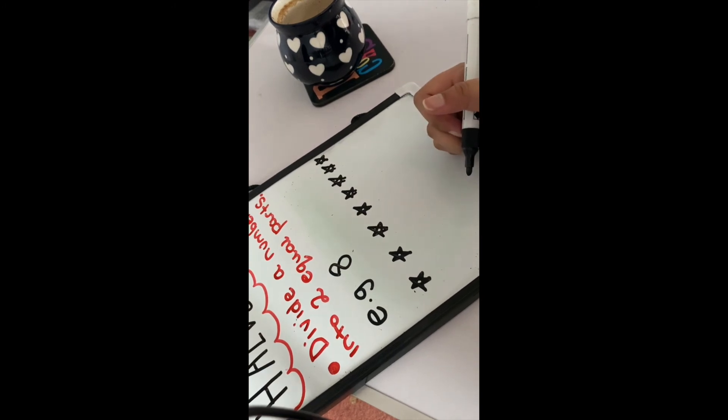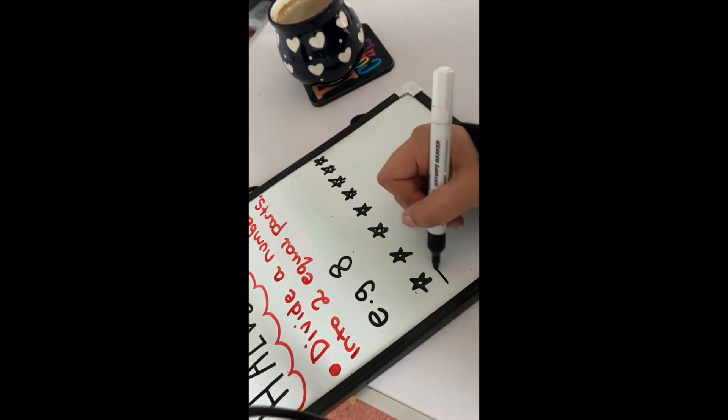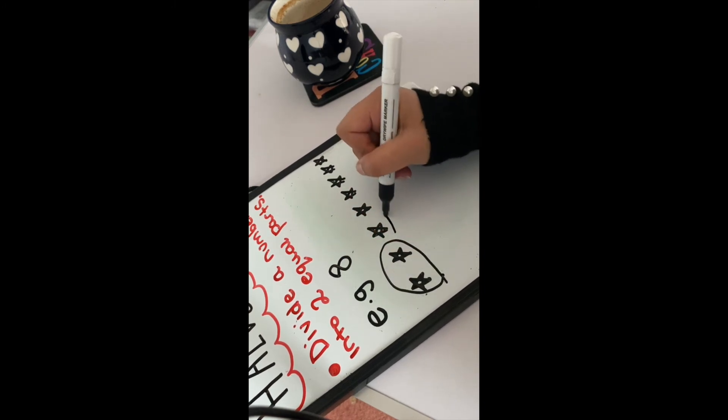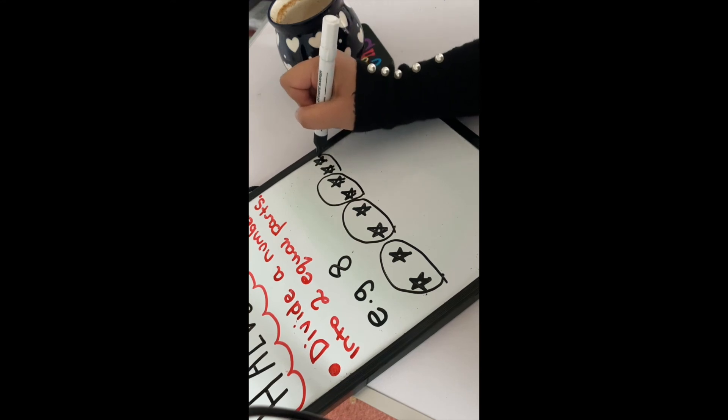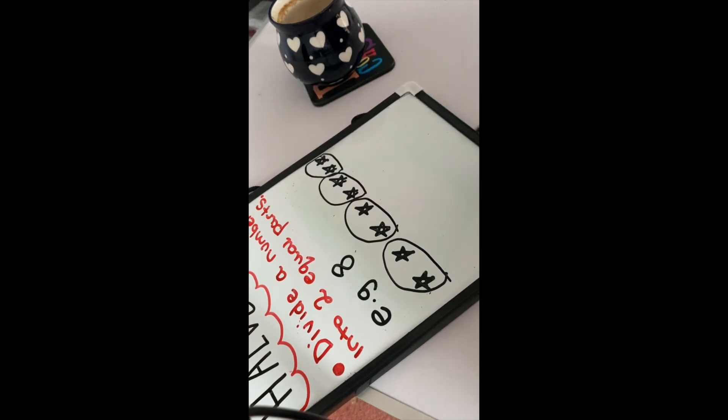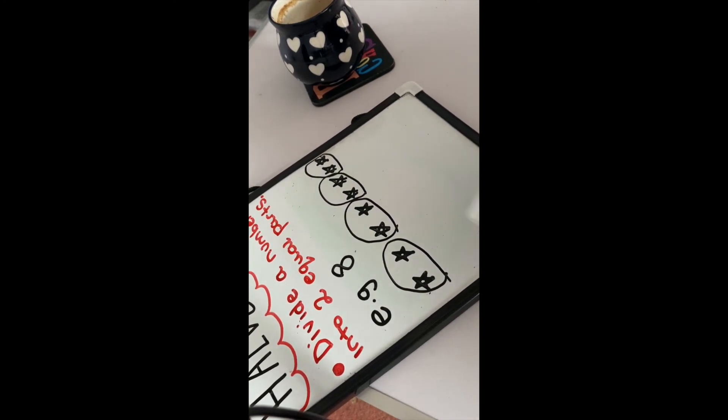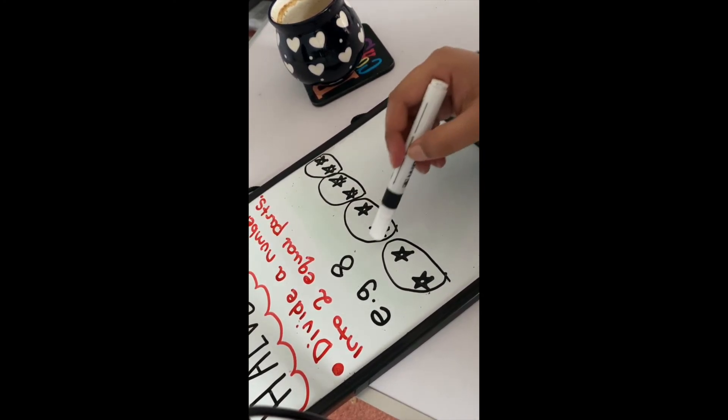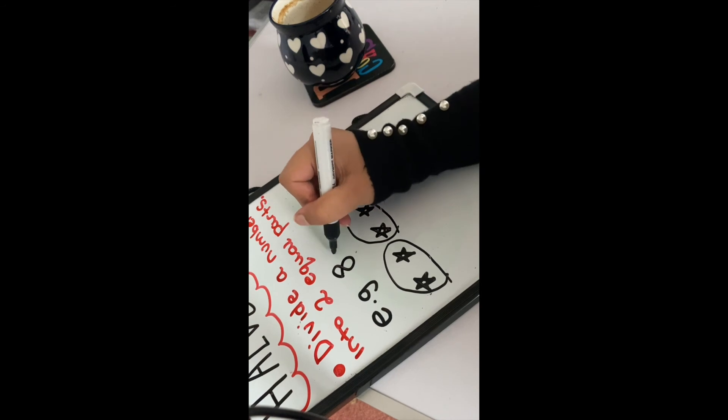Again we're going to count in twos and we're going to put a circle around it. So two, four, six, and I have to squeeze this one - eight. Now we have our stars in groups of two. We are going to count how many circles we have: so one, two, three, four. And that's your answer: half of 8 is 4.